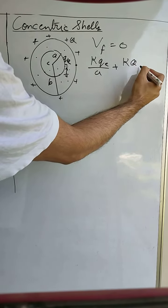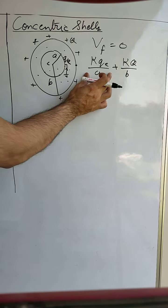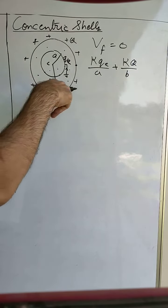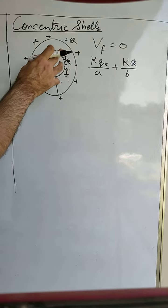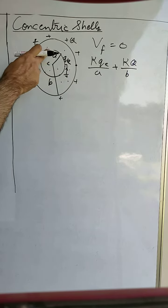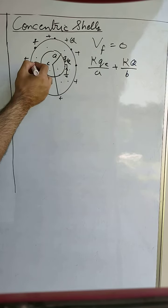It is K into Q upon its radius B. So this is the potential due to its own charge of inner shell and this is the potential due to the outer shell. So always remember when one body is inside another metallic body, then all the points inside the metallic body will have the same potential as on the surface of outer body.